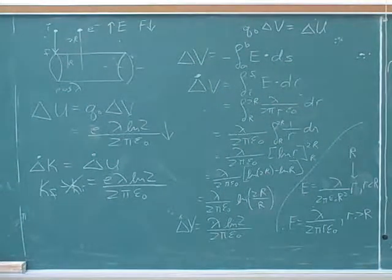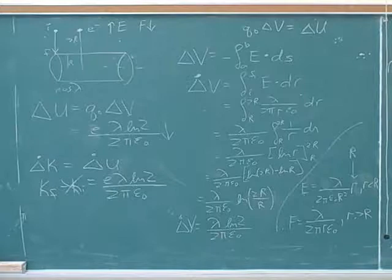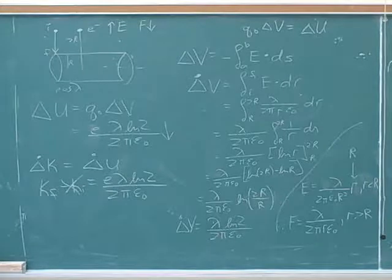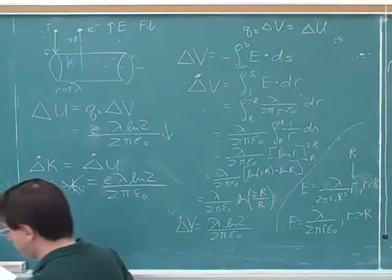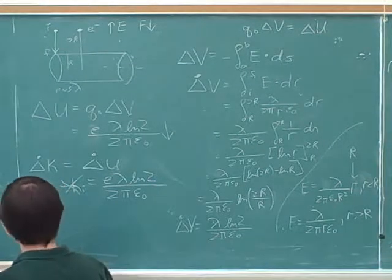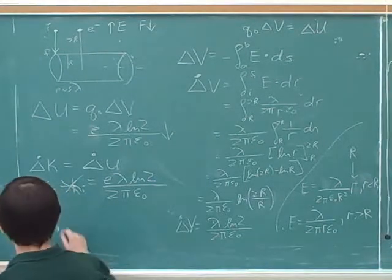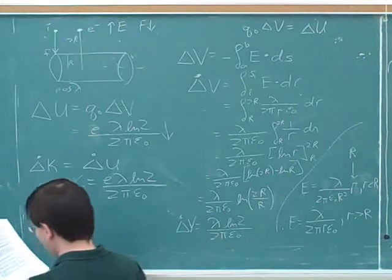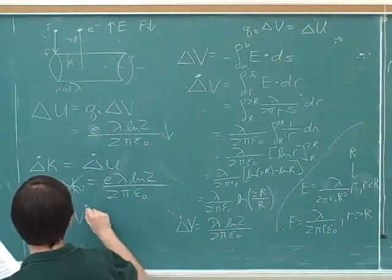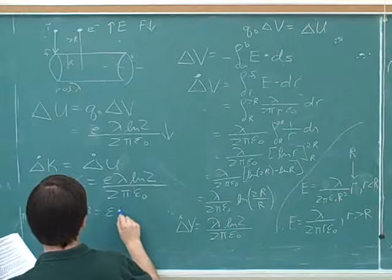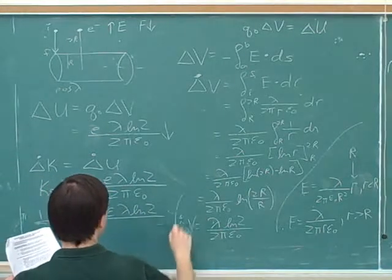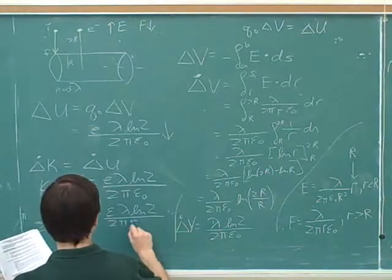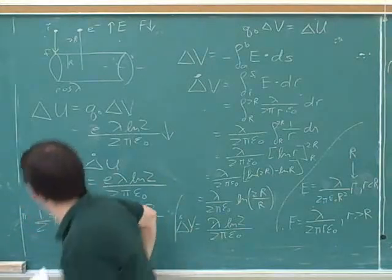So then we know M. Kinetic energy is one-half. What symbol should we use for M? M_e — we want to use the same symbols they gave us. And V, we don't know. So that's one-half M_e V squared.